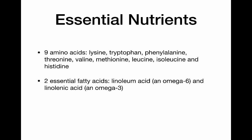So here are our essential nutrients. There are nine essential amino acids — you don't need to memorize these. They are lysine, tryptophan, phenylalanine, threonine, valine, methionine, leucine, isoleucine, and histidine. Those are the nine essential amino acids, meaning you must source them in your diet because your body can't make them on its own.